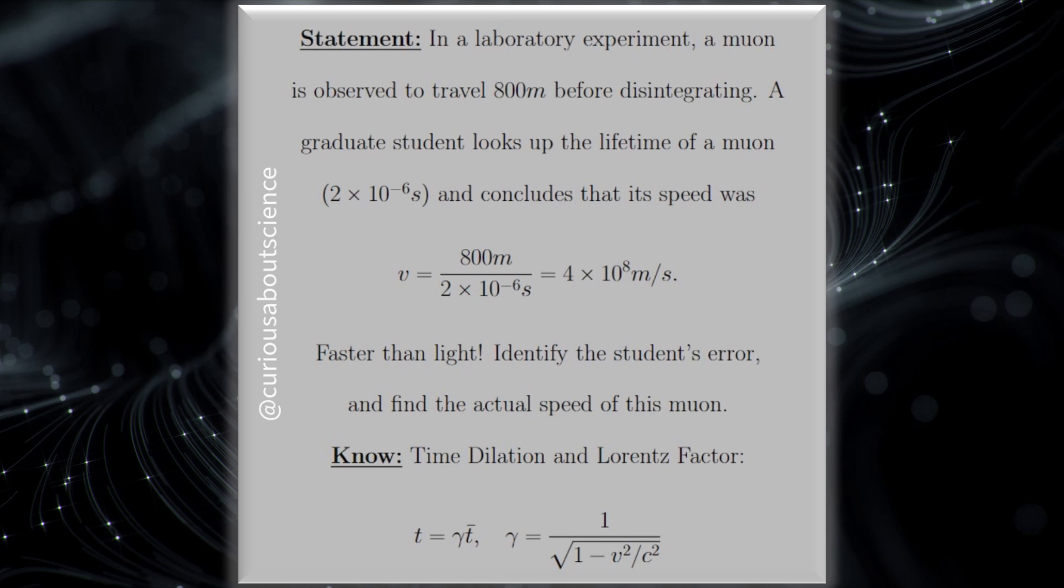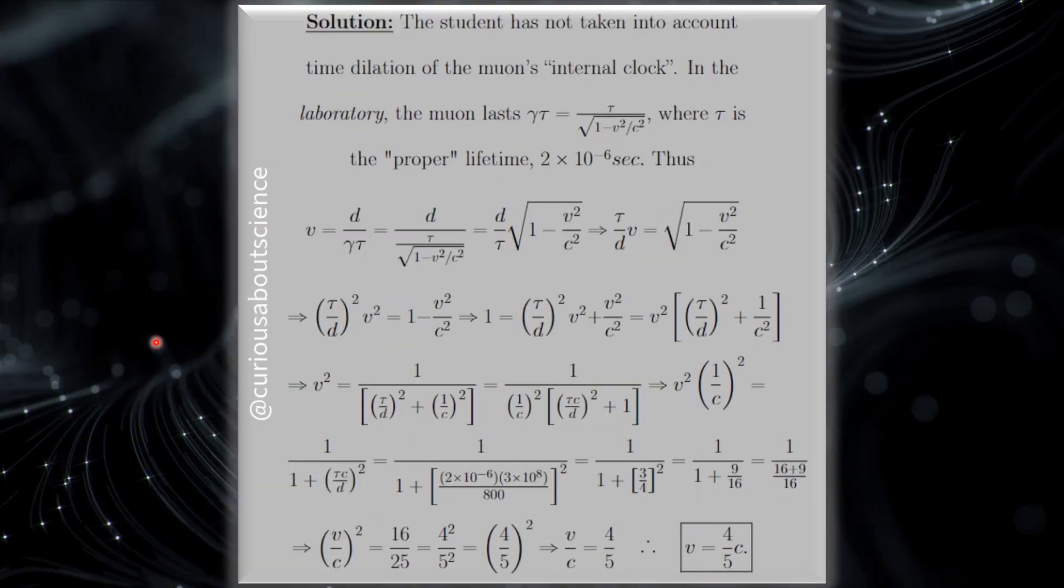And so, yeah, let's go ahead and see what else is there for us. Here, the student has not taken into account the time dilation of the muon's, quote, internal clock in the laboratory. So the muon lasts T equal gamma tau. So that's the Lorentz factor on the time dilation part. And clearly we know what gamma is from the note page.